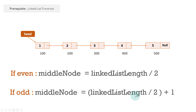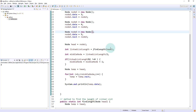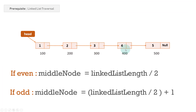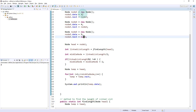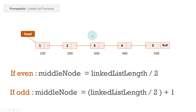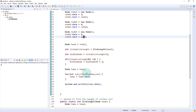Now let's remove the fifth node by setting node4.next = null, making the linked list contain only four elements. Running the program gives output 2, which is correct because with four nodes (even), the middle position is 4/2 = 2. We traverse up to that element minus one time and print that node's data.